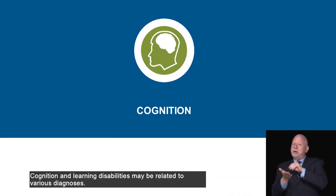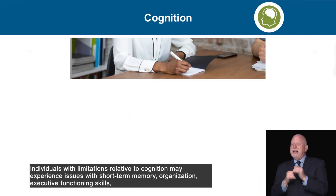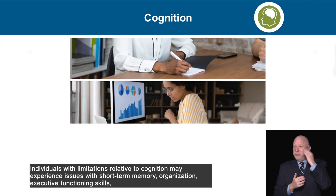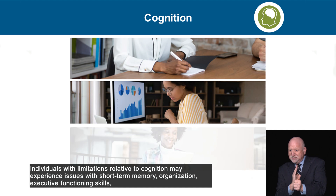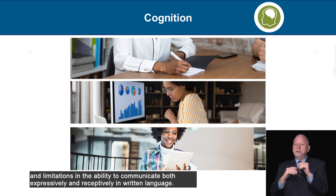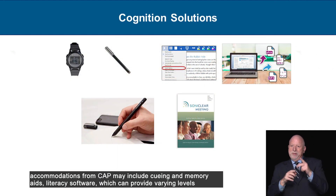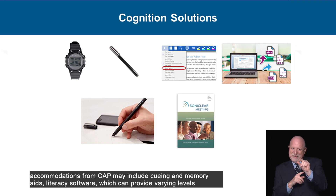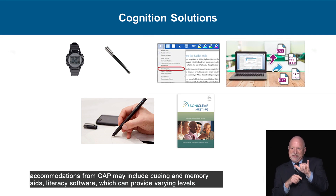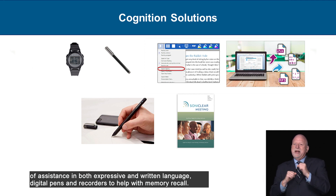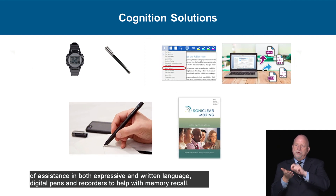Cognition and learning disabilities may be related to various diagnoses. Individuals with limitations relative to cognition may experience issues with short-term memory, organization, executive functioning skills, and limitations in the ability to communicate both expressively and receptively in written language. Accommodations from CAP may include cueing and memory aids, literacy software, digital pens and recorders to help with memory recall.